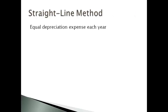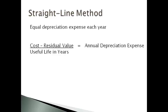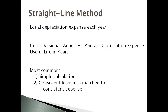The most commonly used method is the straight-line method. This method allocates an equal amount of expense to each period the asset is used. The annual expense is computed as cost less residual value divided by the estimated useful life in years. This is the most commonly used method because the calculation is very simple and many assets are assumed to produce revenue equally over time, so an equal expense is matched to the equal revenues.